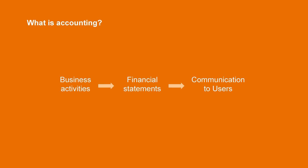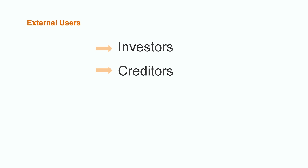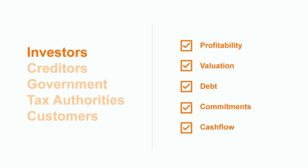We talked about some of the internal users in the company a minute ago, but let's narrow in on some of the key external users who rely on this information. First up on our list is investors and creditors. Outside investors and banks need to make very important decisions on whether to put their money into a company. In order to help them make the most informed decisions, they need an understanding of the company's financial position — things like their profitability, valuation, debt commitments, and cash flow.